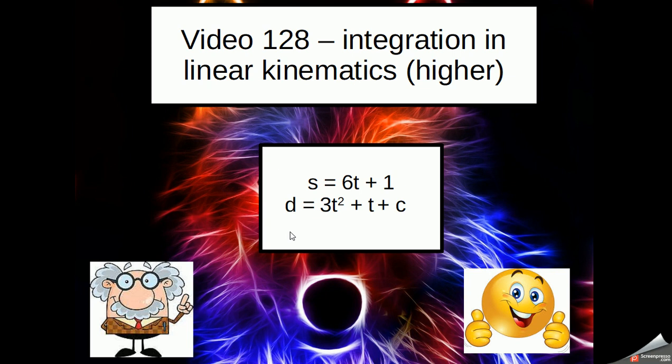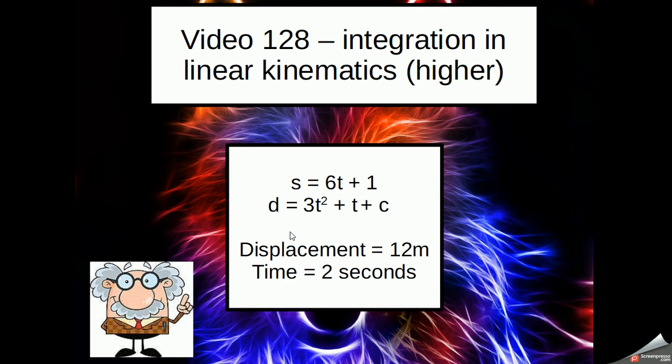3t squared plus t plus the constant. Again, you can only work out that constant if you've been given values. For instance, if we've been told that the displacement, the distance is 12 meters in 2 seconds, we can now substitute those values in, replacing any d with 12 and any t with 2.